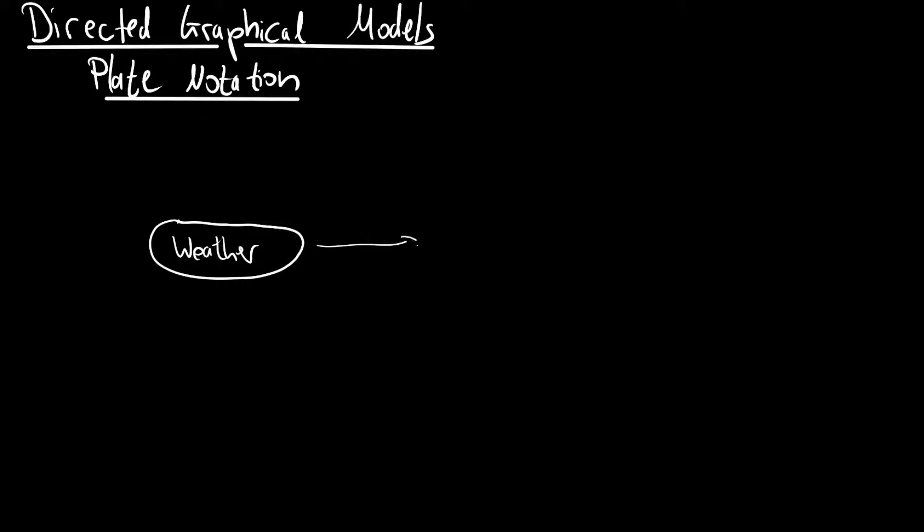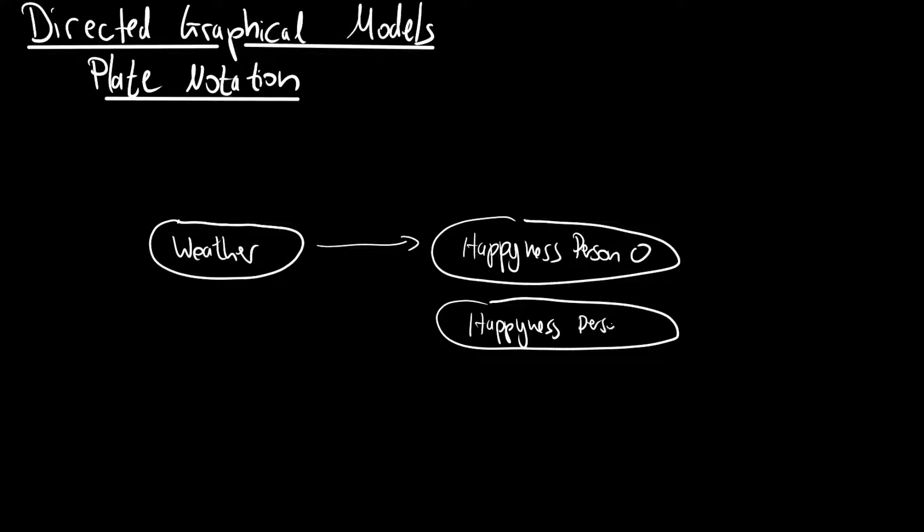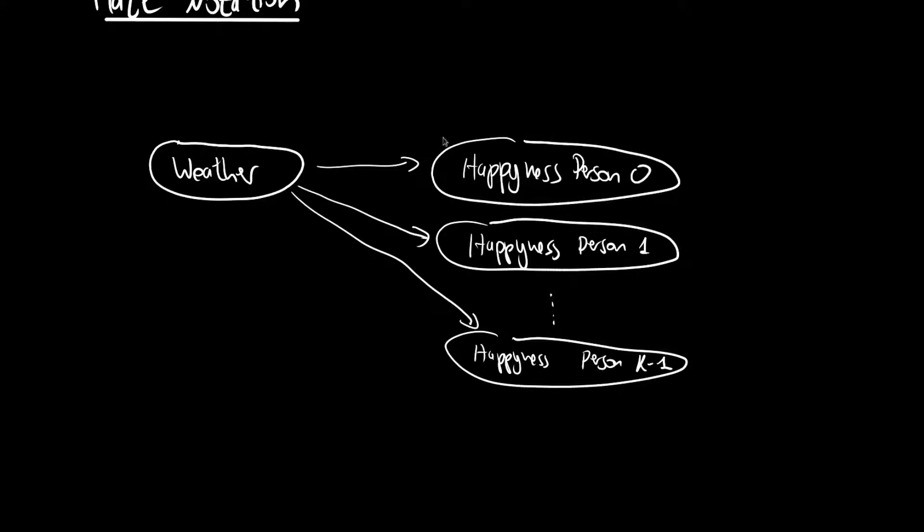And this weather is affecting the happiness of someone. But it's not just affecting the happiness of one person. It's affecting the happiness of a person zero, the happiness of person one, all the way to the happiness of person k minus one. So there are k people here, and they are all affected by the weather. And imagine for instance they are 10, and then you have to draw 10 bubbles or 10 circles for these random variables. And this is where plate notation comes in, in order to simplify this.